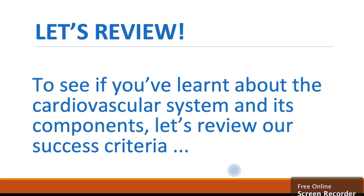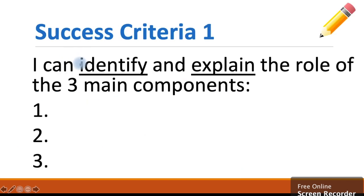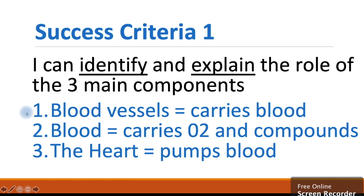Well done, you made it. Let's review to see if you've learned about the cardiovascular system and its components by reviewing our success criteria. Our first success criteria: can you identify and explain the role of the three main components? You'll need your pen and paper for this — write down the three components and explain their roles. The first component is blood vessels; they carry blood. The second is blood; this carries oxygen and various compounds around the body. And the third is the heart — this is the engine; it pumps blood around the body.